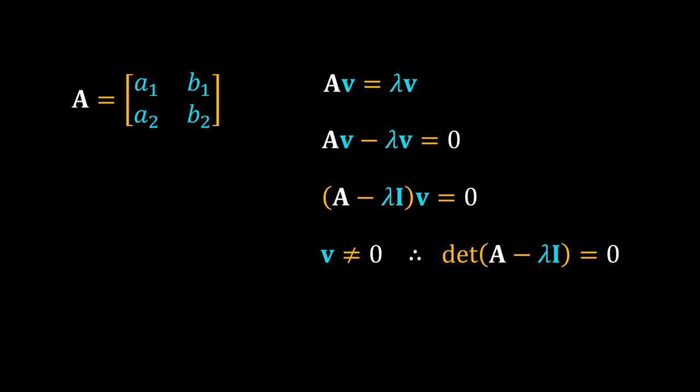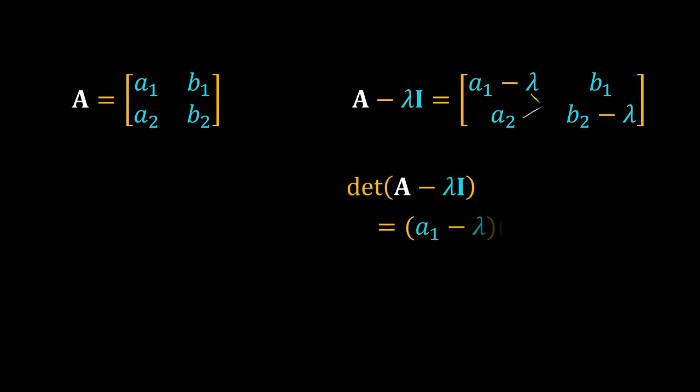To calculate lambda, we have to solve this characteristic polynomial. For that, calculate the determinant of (A minus lambda I). Let me expand (A minus lambda I). The determinant is (a1 minus lambda) into (b2 minus lambda) minus a2 into b1.